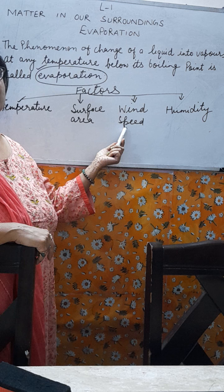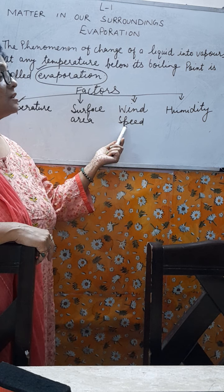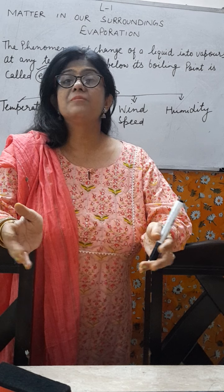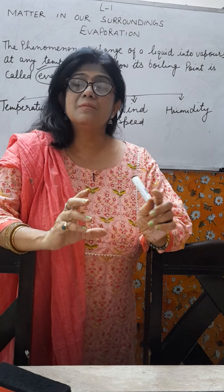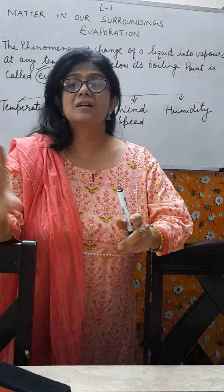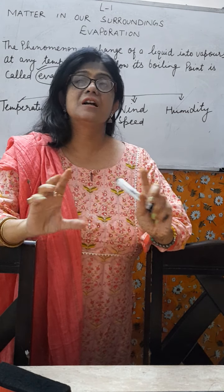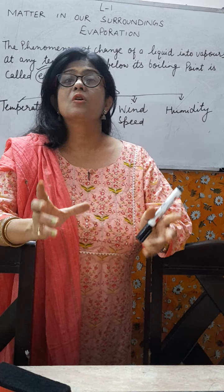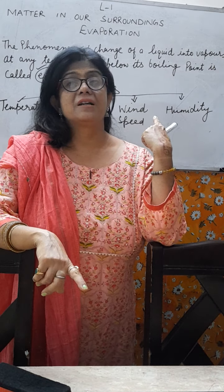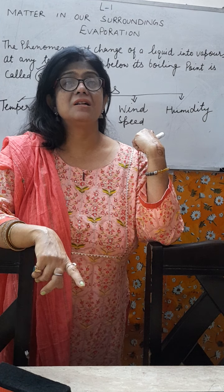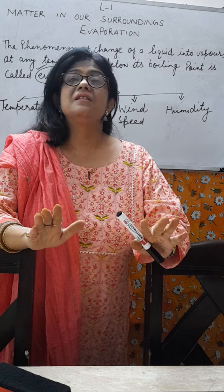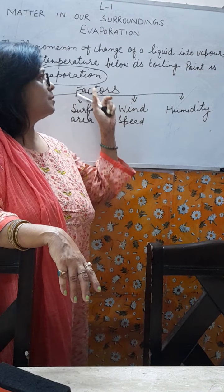Third factor is wind speed. If you keep clothes under a fan for drying, they dry more quickly. Similarly, if you keep water under a fan, it changes into vapor more quickly compared to water kept in a closed space. When you increase the wind speed, the particles move faster, are carried away by the wind, and there is less water vapor in the surrounding. So wind speed is also directly proportional to evaporation.